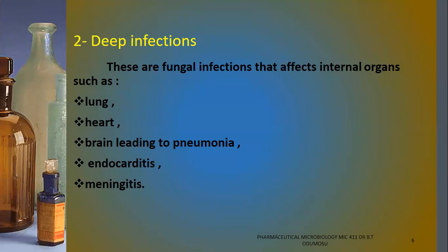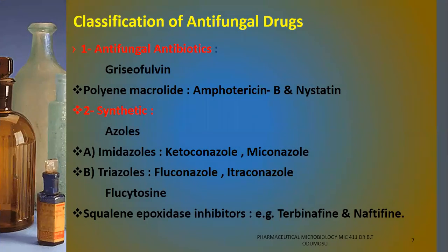We also have deep-seated infection. Deep-seated infections consist of internal organs affected by fungi — examples include the lungs, heart, and brain. Fungi can also cause endocarditis and meningitis. These types of infections are at the systemic level; we don't call them superficial because they are not infections we can see physically — they can only be detected through diagnosis. This is unlike superficial infections we can see at the skin level. These are the two major types of fungal infections.